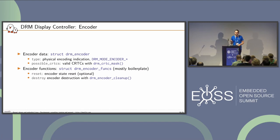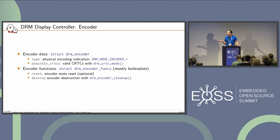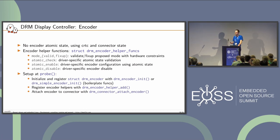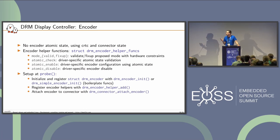The encoder is very simple — it has no atomic state. You just set the cleanup callback in the functions struct to properly destroy it. Helper functions are minimal: atomic_enable and atomic_disable to enable/disable the encoder, using the CRTC state if configuration is needed. You attach the encoder to a connector and to a CRTC.